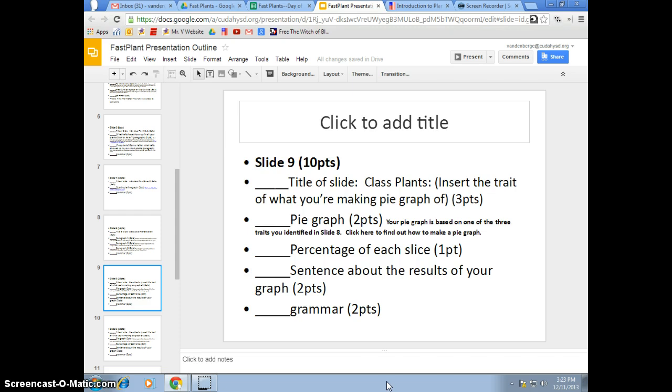You should currently be on slide 9, 10, or 11. All three of them are going to use pie graphs. Your pie graphs that you are creating are going to be based on your slide 8 and your class data interpretation. What were the three things that seemed to be the traits that were so common in all plants over 10 centimeters tall?